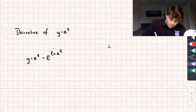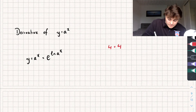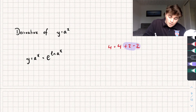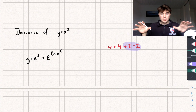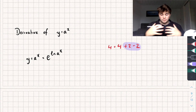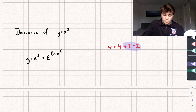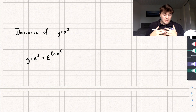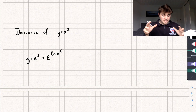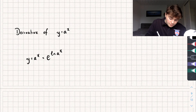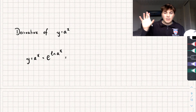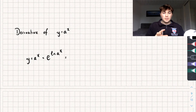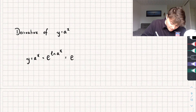As another example that might be easier to understand: 4 is equal to 4 plus 2 minus 2, right? Just because we've got this little plus 2 minus 2 going on, it doesn't actually affect the fact that 4 is still 4. The same thing is true with e to the power of the natural log of a to the x. And the reason I've done this is because now I can bring down the power of x to the front of my logarithm, and we get e to the x natural log of a.